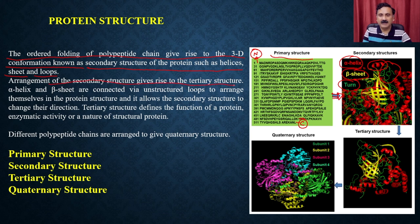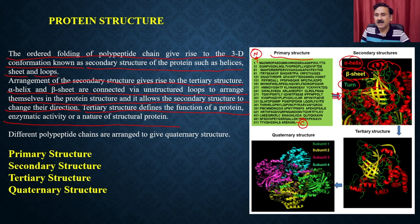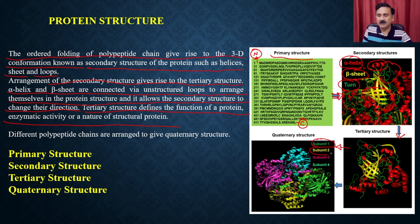Arrangement of the secondary structure gives rise to tertiary structures. Alpha helices and beta sheets are connected by unstructured loops to arrange themselves in the protein structure, allowing secondary structures to change their directions. Tertiary structure defines the structure of a protein and its enzymatic activity or nature as a structural protein. If the protein has multiple subunits, it gives the quaternary structure — for example, with subunits 1, 2, 3, and 4 coming together to form the quaternary structure.